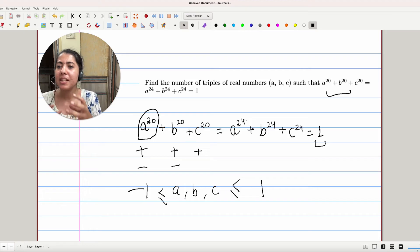So here we can conclude that the values of a, b, and c cannot be any number between minus 1 and 1. So the only possible cases are minus 1 and 1.